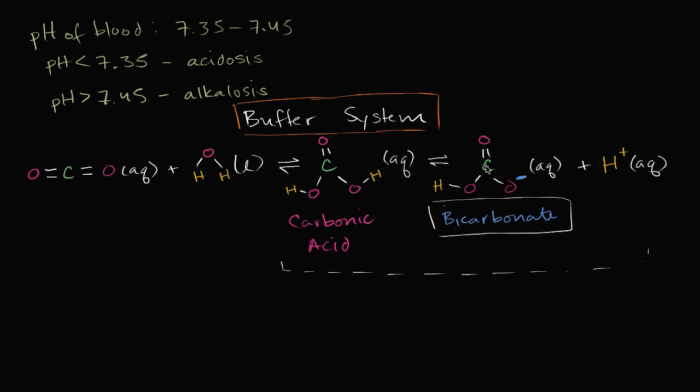You can even look at the different constituents of these molecules and account for them. You have one carbon here, one carbon here, one carbon there, you have one, two, three oxygens there, one, two, three oxygens there, one, two, three oxygens there, you have two hydrogens, two hydrogens, two hydrogens. But let's just think about, what if you started dumping hydrogen ions in the blood? If you were to dump hydrogen ions, and if you didn't have this buffer system, then your pH would decrease, your pH would go down, and if you do it enough, you would end up with acidosis.